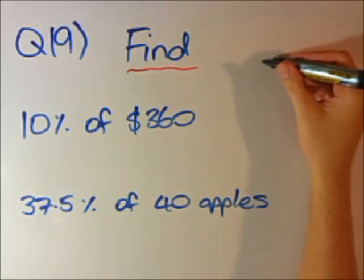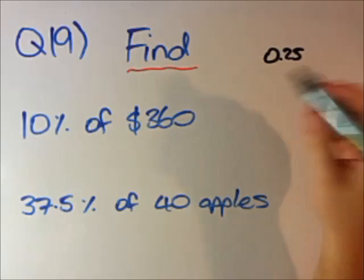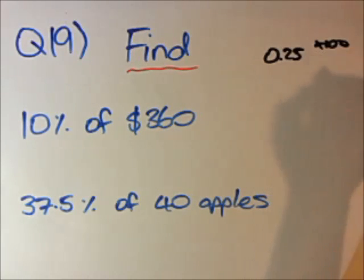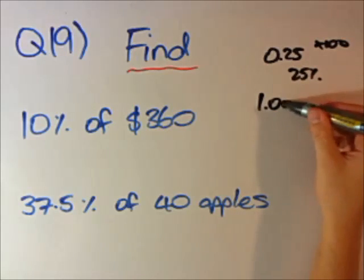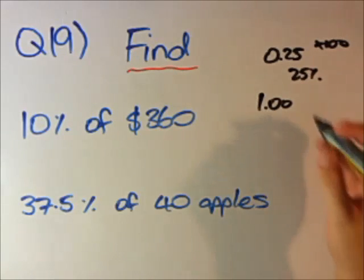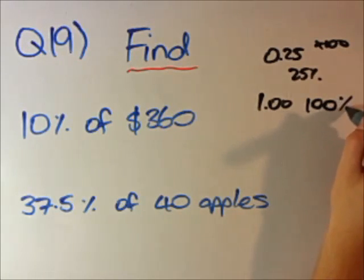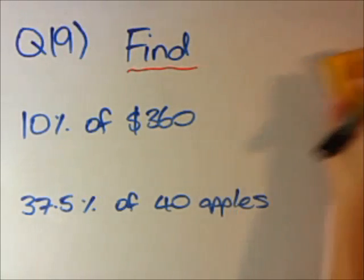When we converted decimal numbers like 0.25 into a percentage, we multiplied by 100 or moved the decimal point two places. So 0.25 became 25%. The decimal number 1.0 is like saying I have one apple — times by 100 gives 100%. So if we have a percentage and want to convert it back to a decimal, we just divide by 100.